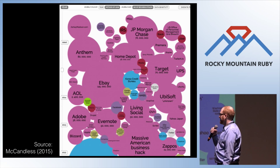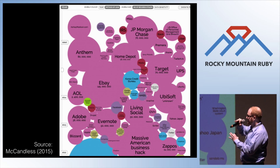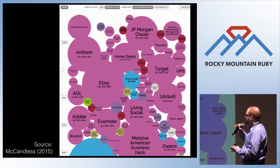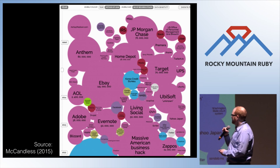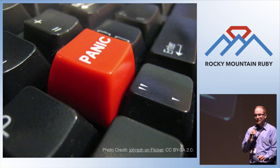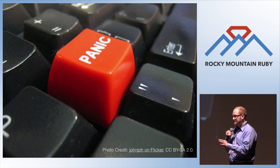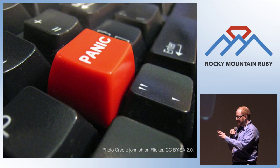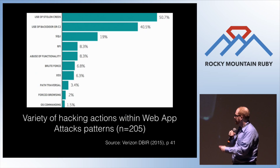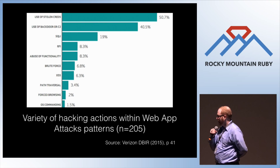This diagram shows a whole host of data breaches in the last few years, where the size of the circle represents the number of records breached. If this makes you want to hit the panic button as a developer, that would be reasonable. However, the fundamental problems are not just an on-off switch. This chart from the Verizon data breach report shows that of web application attacks — enterprise class systems with a sample size of 205 — over 50% were through the use of stolen credentials.